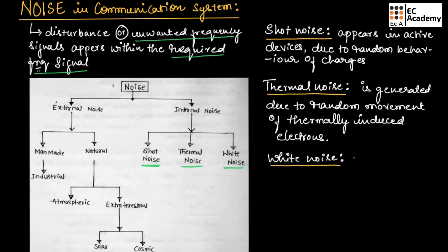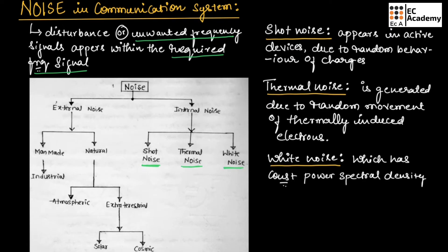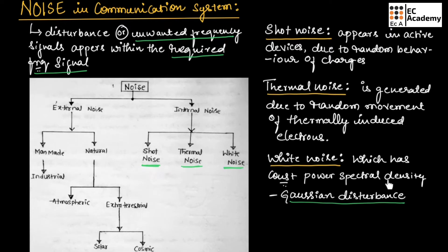The noise which has constant power spectral density over a wide range of frequencies is known as white noise. White noise is also known as Gaussian disturbance.